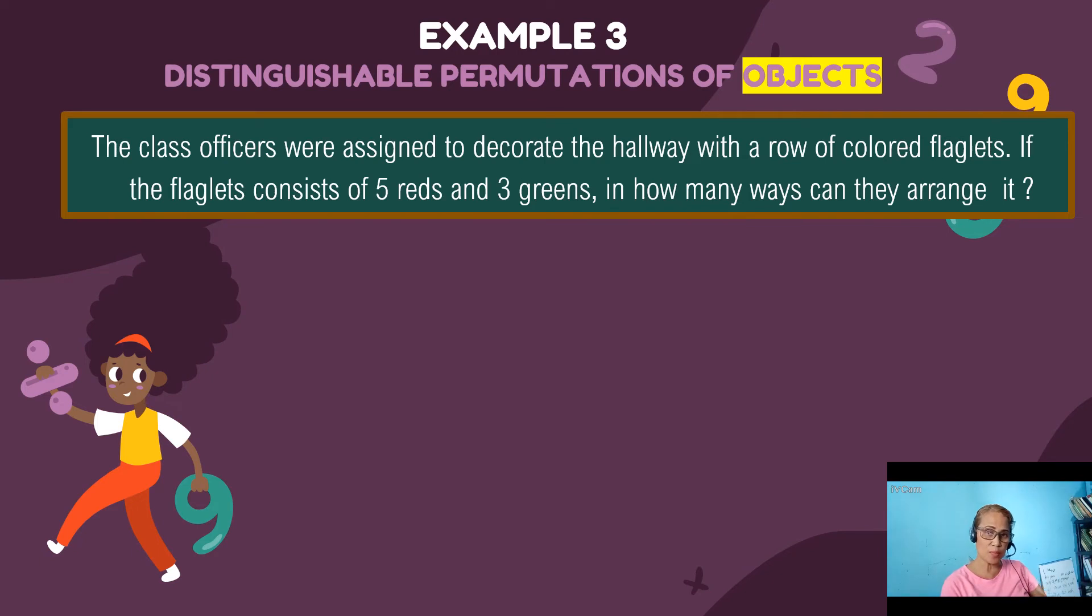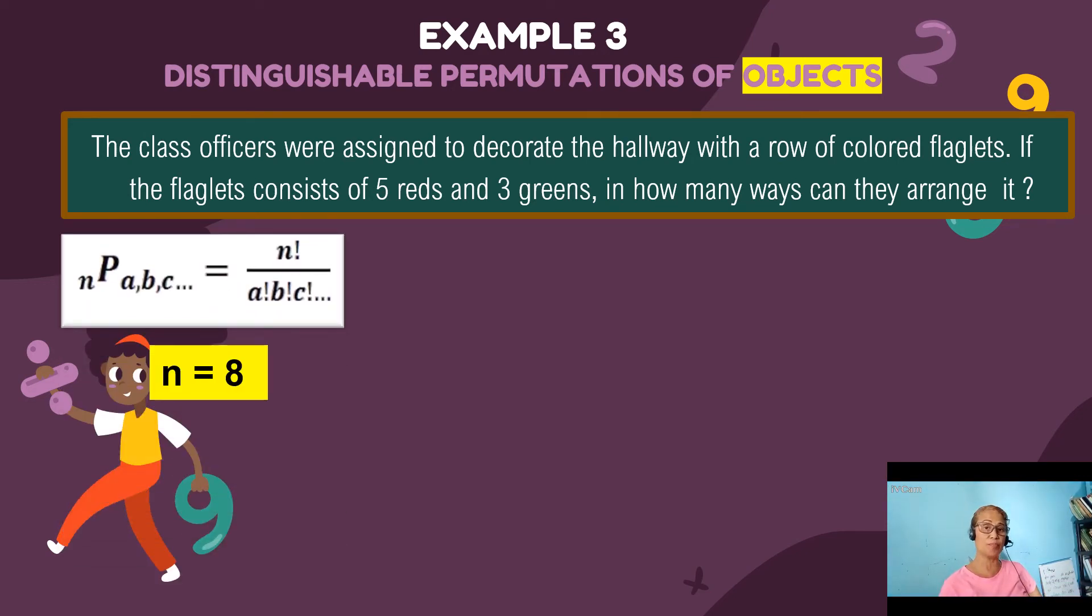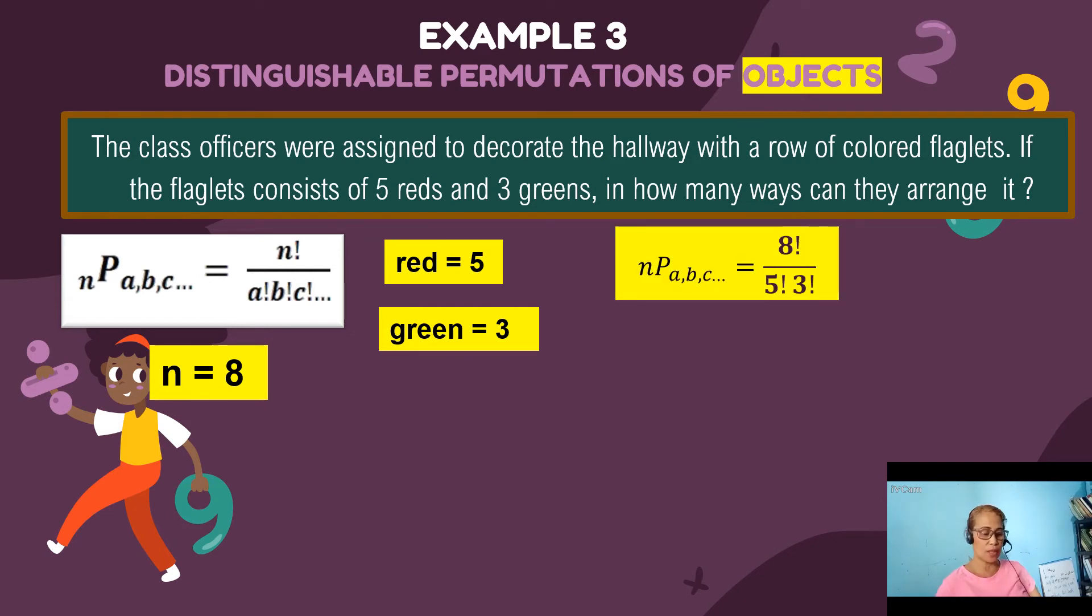So first, let's count the number of objects that we are supposed to arrange. Since there are five and three, you just add five plus three. So our n has a value of eight. And then red is repeated five times. So red will be equal to five. And then green is repeated three times. So green is three. Then by solution,